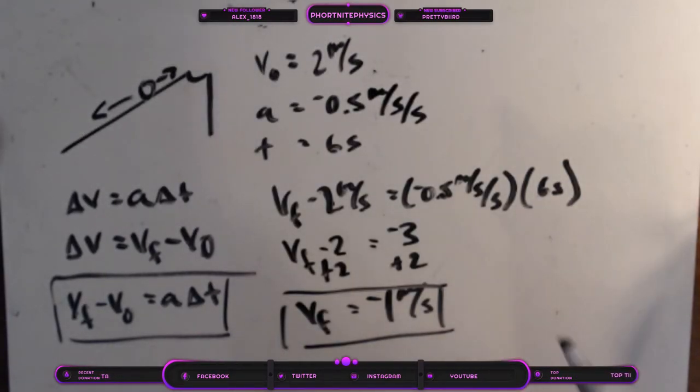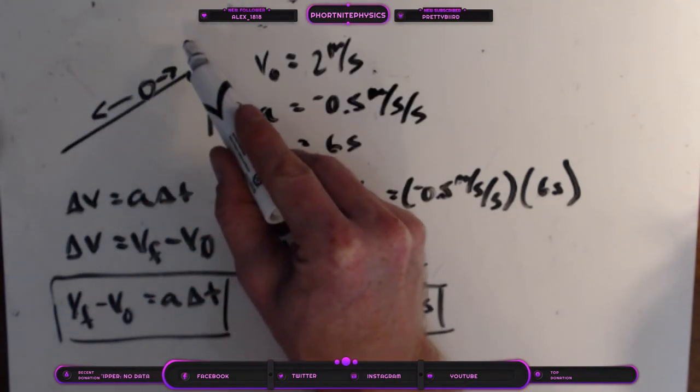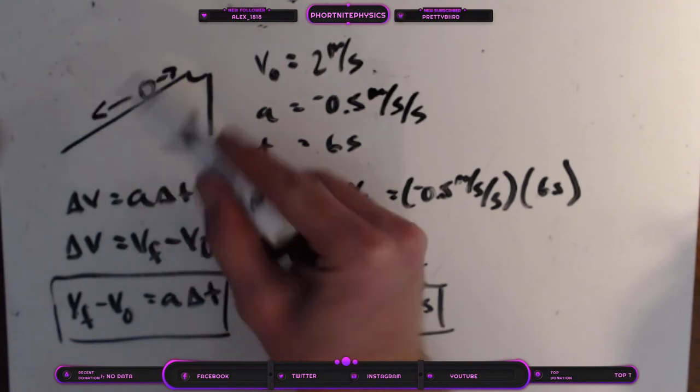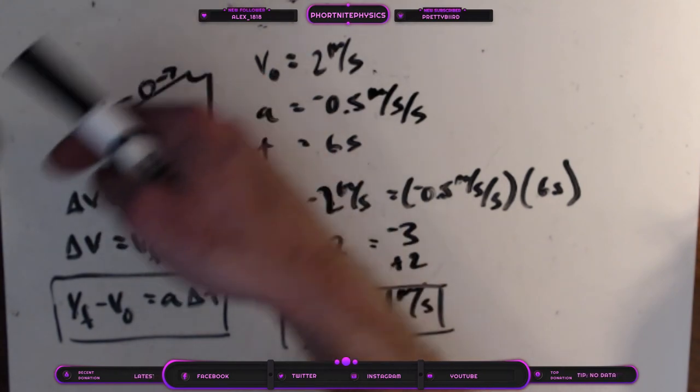Now what does it mean that we have a negative 1 meter per second instead of a positive 1 meter per second? That means that our ball rolled up the hill, stopped, turned around, and is now accelerated far enough back that it is now traveling at 1 meter per second down the hill.